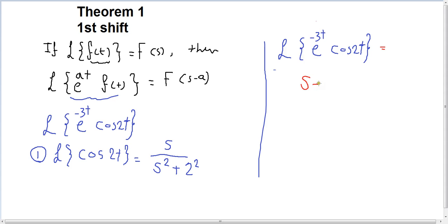So S minus minus 3, so we're going to have S plus 3 over S plus 3 squared plus 4. We have the same shift, numerator and denominator, numerator and denominator. Then the shift is okay, the function is correct and it's right.